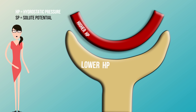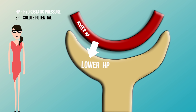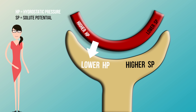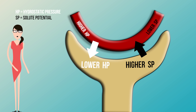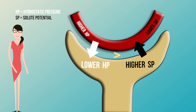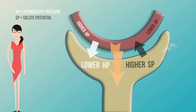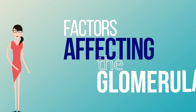Let's look at the forces acting during ultrafiltration. First, the difference between the hydrostatic pressure of the blood and the hydrostatic pressure of the filtrate causes a net flow of liquid into the capsule. Second, the difference between the solute potential of the filtrate and the plasma causes a net flow of water by osmosis out of the capsule and into the blood. Since the difference in hydrostatic pressures is greater than the difference in solute potentials, there is an overall net flow of filtrate into the capsule.